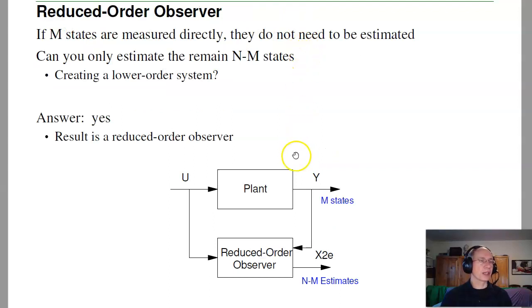Well, here's a question for you. Do I have to estimate all n states? I'm already measuring a couple states, call it m states. Why do I have to estimate the states that I'm measuring? Can't I just estimate the states that I'm not measuring? If you could do that, that would be called a reduced order observer. And the answer is yes, you can.